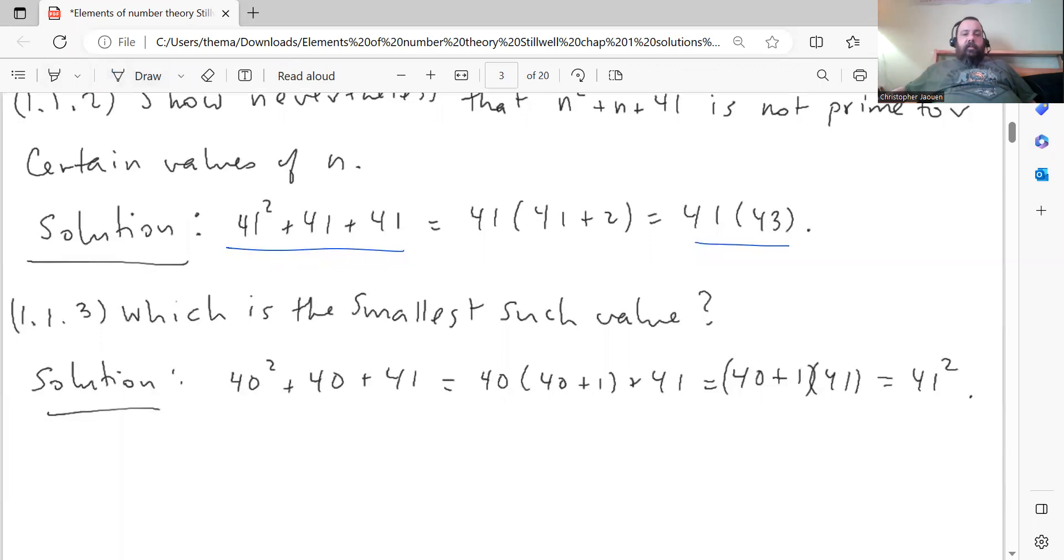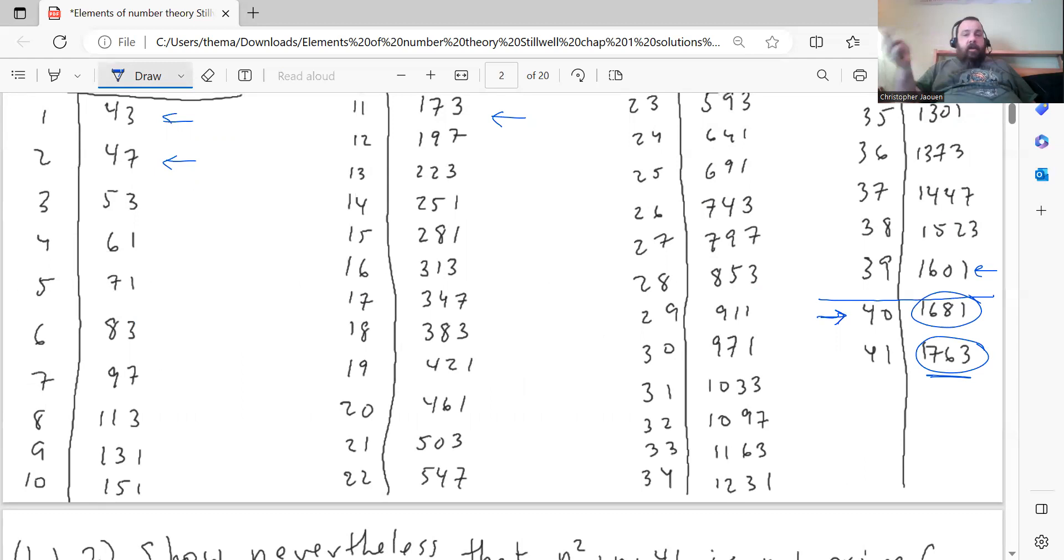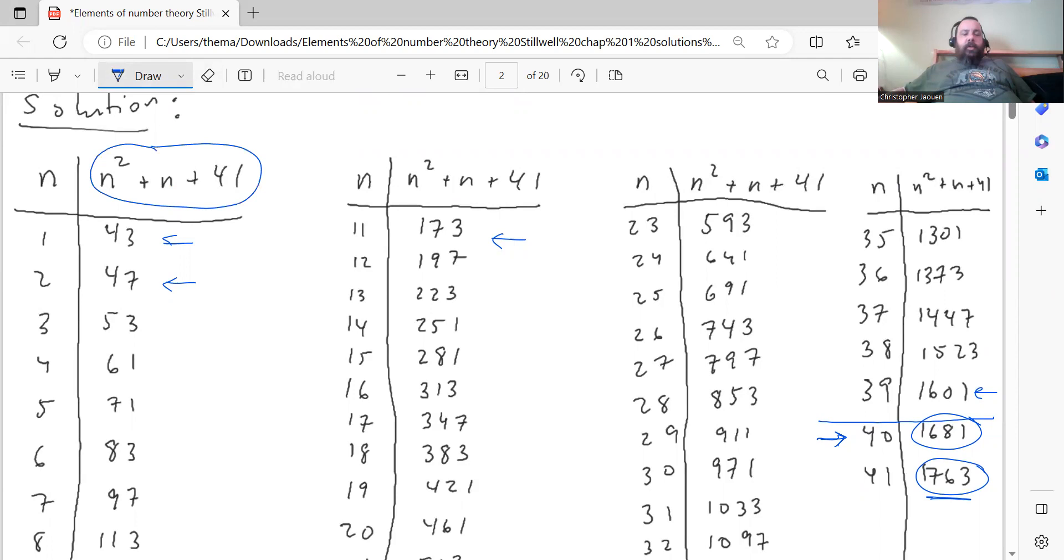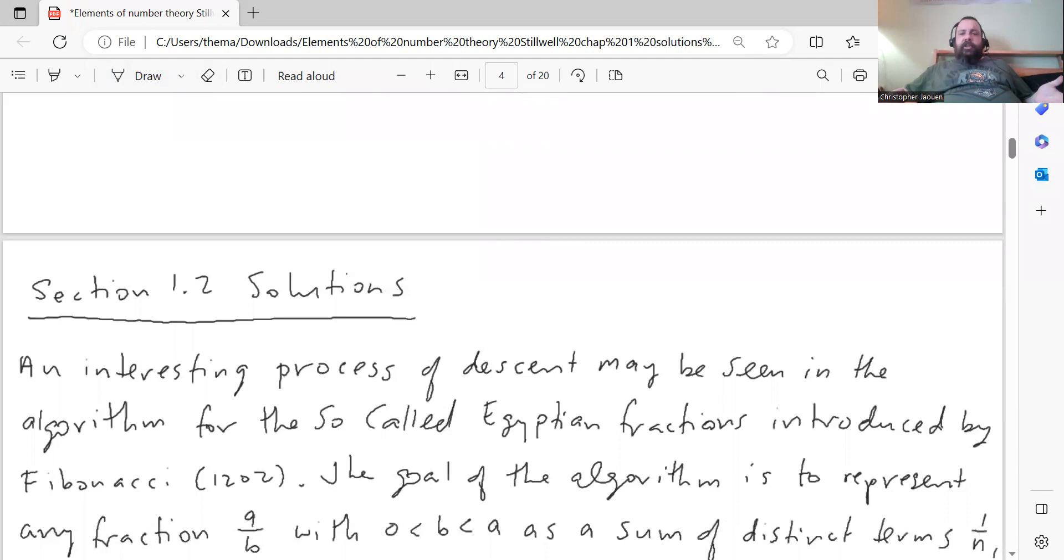In the next question, number three, he asks which is the smallest such value? It turns out that when you plug n equals 40 into that expression, you get a composite number as well. It turns out being a perfect square. So if you take 40 squared plus 40 plus 41 and simplify, you get 41 squared. So the smallest number that you get from this expression that's not prime is 1681. But it works for every natural number up until 39. I remember seeing this expression in the proof workshop I took as an undergraduate, which I found kind of neat that this function works for so many values of n, giving you primes.